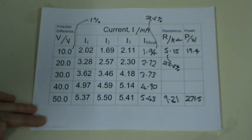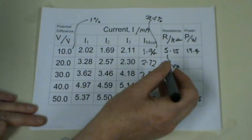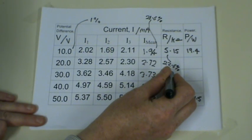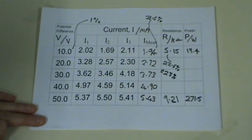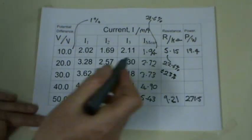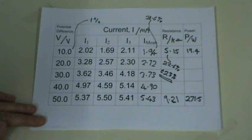Before you write that as your final answer, remember one thing. When reporting uncertainties or percentage uncertainties, never report more than two significant figures. You wouldn't write 22.6%, you'd write 23%. You could add the plus or minus sign if you wanted. That's the percentage uncertainty in the resistance value.